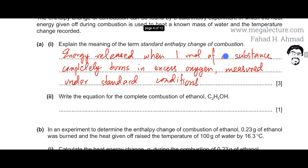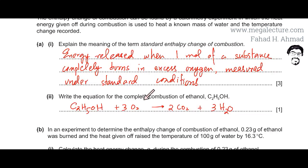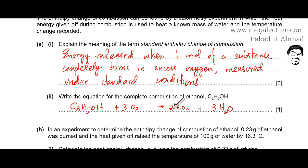Moving to the next part, we need to write the equation for the complete combustion of ethanol. Ethanol burns with oxygen to produce carbon dioxide and water. The equation is balanced: two carbons give two CO₂ molecules, six hydrogens give three water molecules, and there are seven oxygens in total in the products, matching seven oxygens on the reactants side.